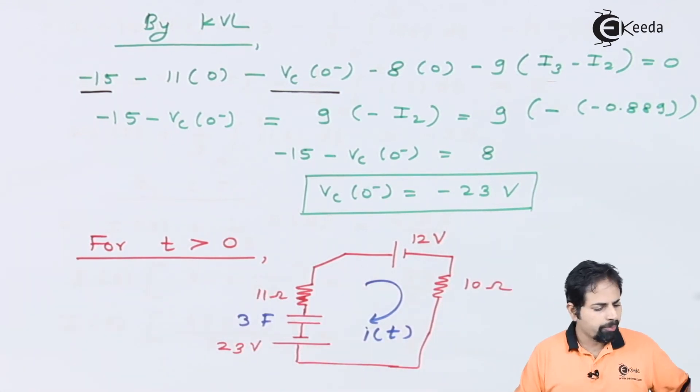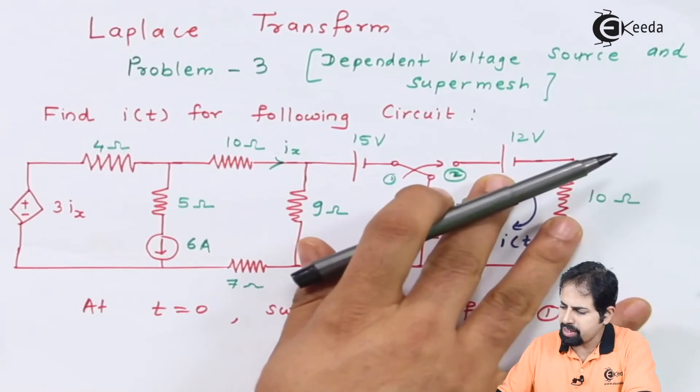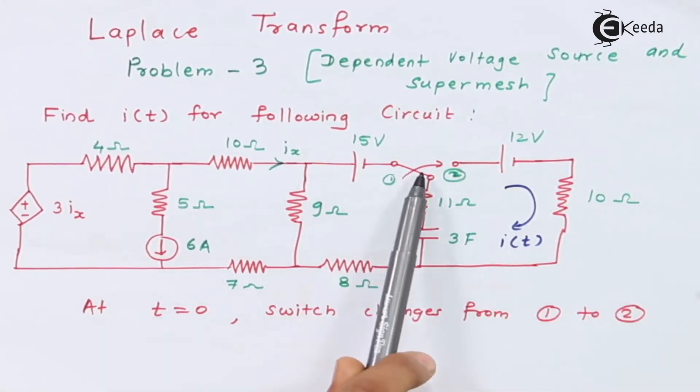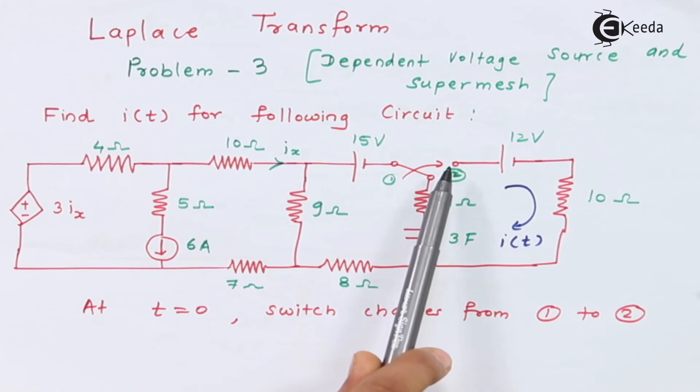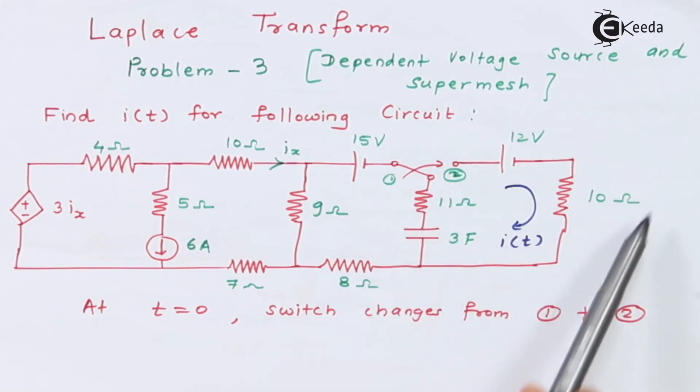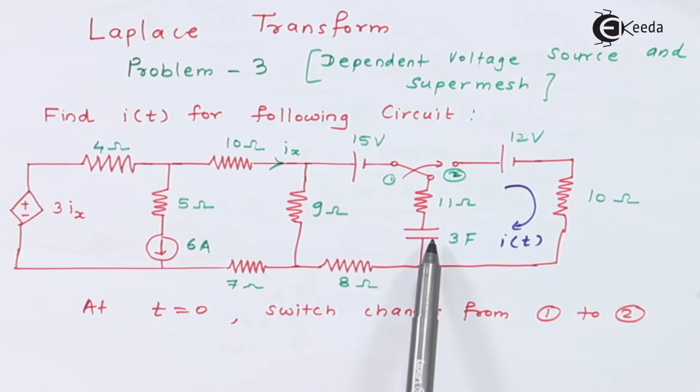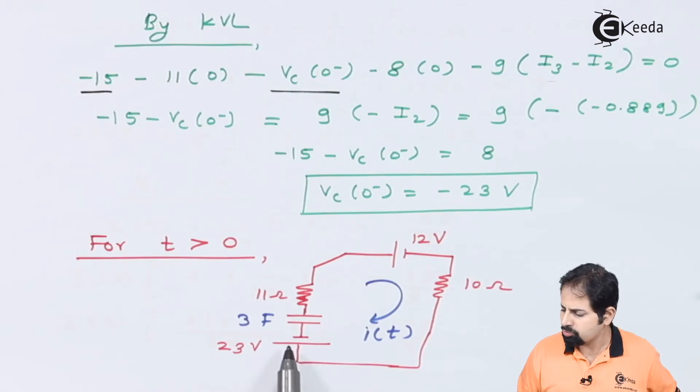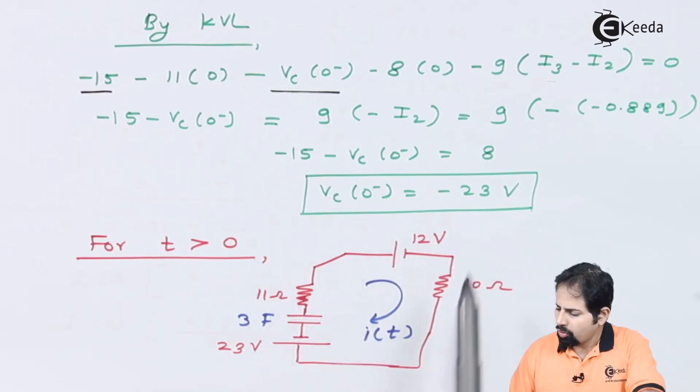So now it is time to draw the circuit for time T greater than 0. When time T is greater than 0, this switch will move to position number 2. So we will only draw this part of circuit, and we will replace this capacitor of value 3 farads with the same capacitance as well as the voltage source of minus 23 volts. So I have written minus and positive like this, so here I am writing 23 volts.